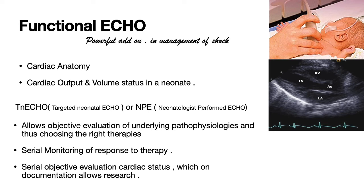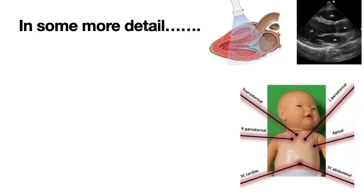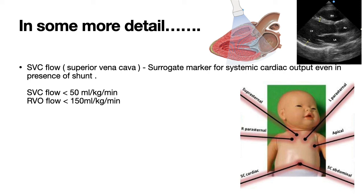Functional echo allows objective evaluation of underlying pathophysiology, thus helping choose the right therapies. It also assists in serial monitoring of response to therapy and serial objective evaluation of cardiac status, which on documentation allows research. In older children and adults, left and right ventricular output are equal; however, in neonates, the presence of shunts may result in unequal output from both ventricles.